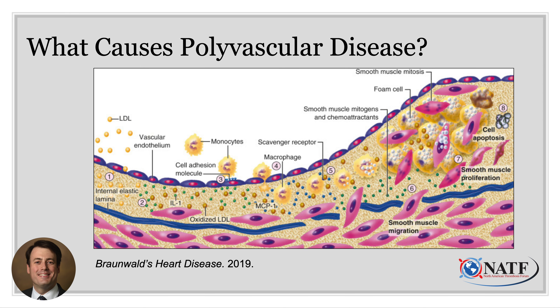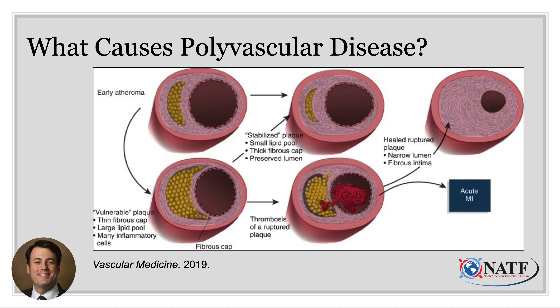Atherosclerosis is a process that happens in many of us over a lifetime. This is when things like cholesterol and cells that play a role in our immune system travel from the blood into the wall of the blood vessels themselves. Over time this builds up, inflammation plays a role, and it can lead to plaques or blockages in our arteries. Atherosclerosis can make the artery more narrow so blood flow has trouble going through it, or in some cases the lining over the atherosclerosis can fracture, causing a blood clot to develop. Thrombosis plays a key role in all the different types of polyvascular disease.